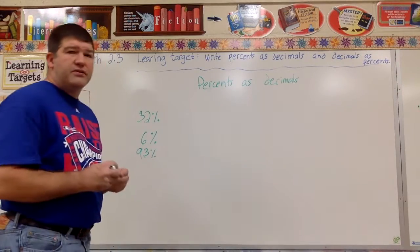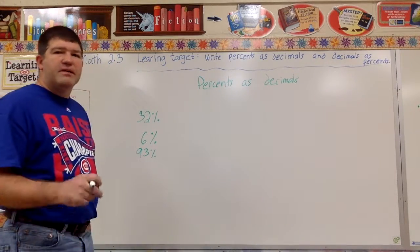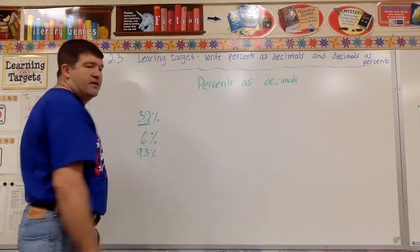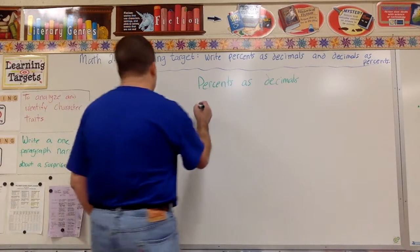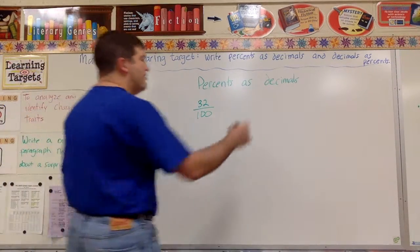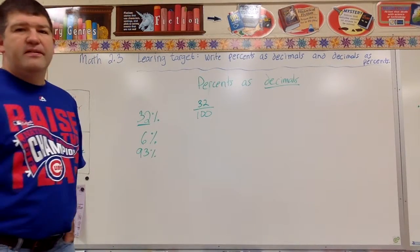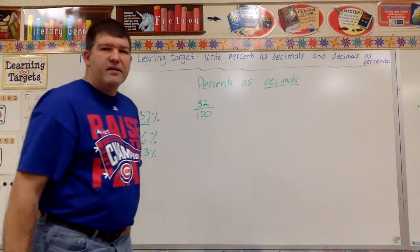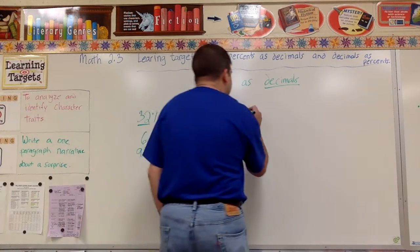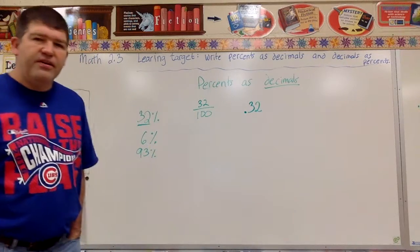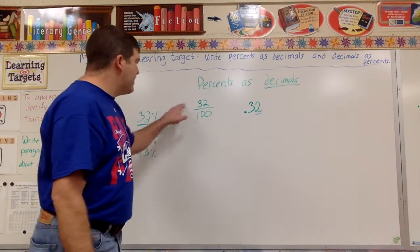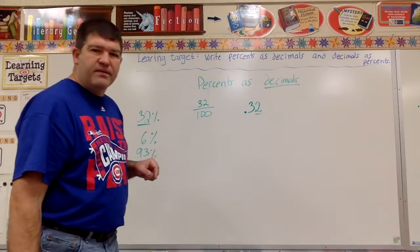There are a couple of different ways to convert. One way: any percent is just that number over 100. So 32 percent is 32 over 100, which is 32 hundredths. I want to get it to a decimal — I could do 32 divided by 100. Since it's 32 hundredths, that's 0.32.